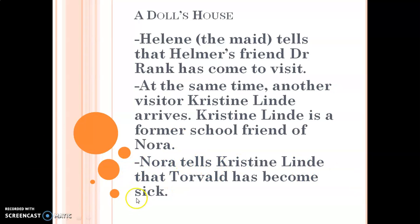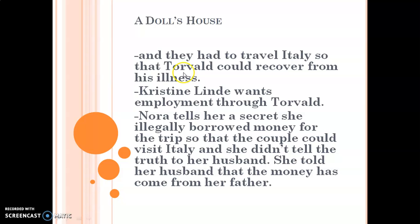Both childhood friends meet and start talking. In this conversation, Nora tells Kristine Linde a secret: that Torvald had become sick and they had to travel to Italy so that Torvald could recover from his illness — and for this trip, they needed money.